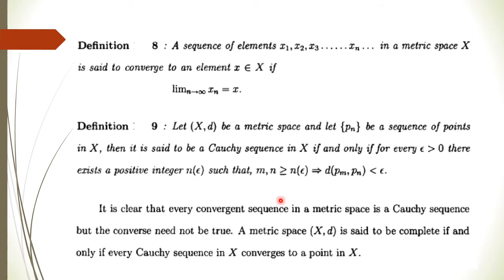Now, what do you mean by convergence? Given a sequence X₁, X₂, X₃, ..., Xₙ in a metric space X, this sequence is said to converge to X if the limit as n goes to infinity of Xₙ equals X. In that case we say the sequence Xₙ converges to X.